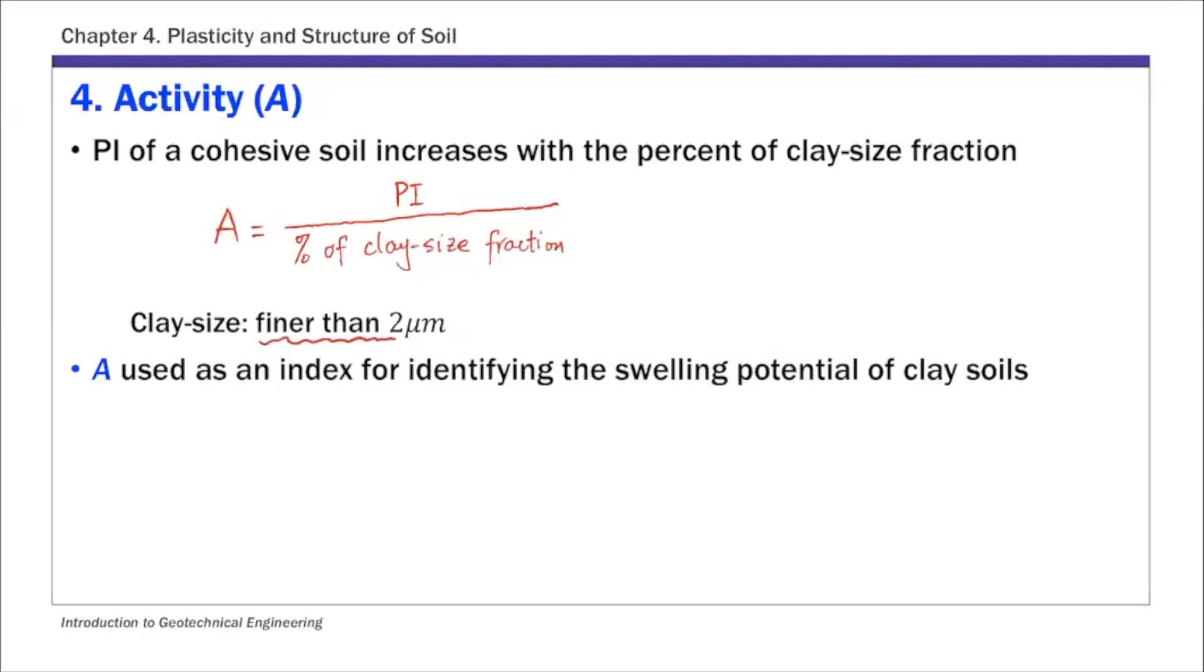This clay-sized fraction is defined as particles that are finer than 2 microns. So that's the definition of activity. And this A is used as an index for identifying swelling potential for clay soils. So that's the fourth index, activity.